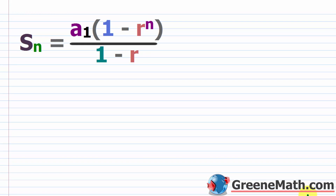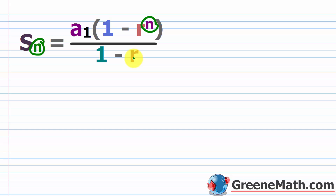Now let's talk about geometric series — summing the first n terms of a geometric sequence. So s sub n is the sum of the first n terms. For example, s sub 10 means you sum the first 10 terms. The formula is: s sub n equals a sub 1 times the quantity 1 minus r raised to the n, all over 1 minus r.